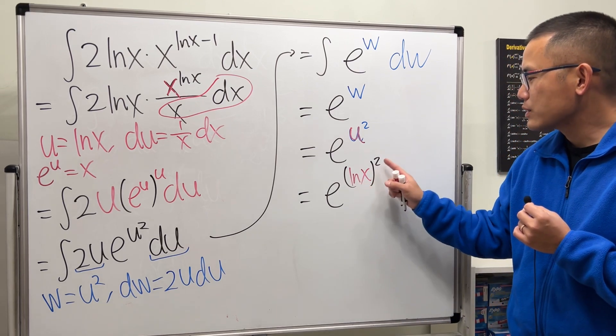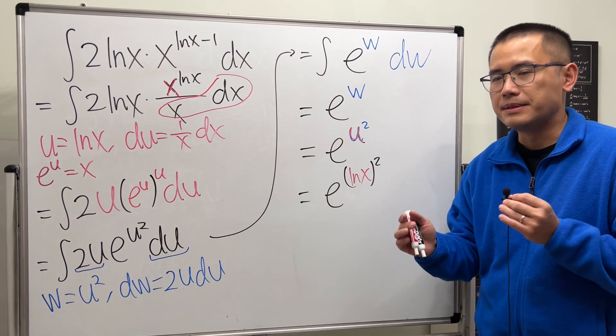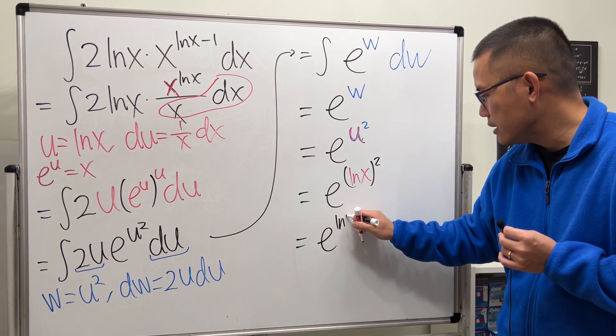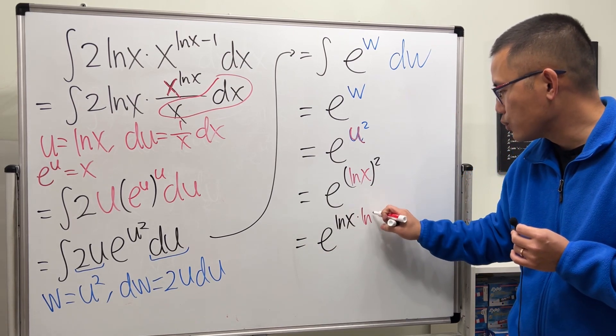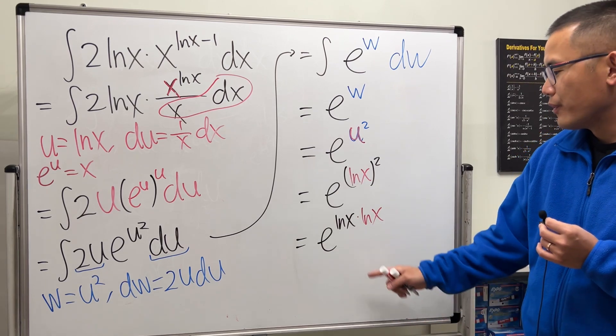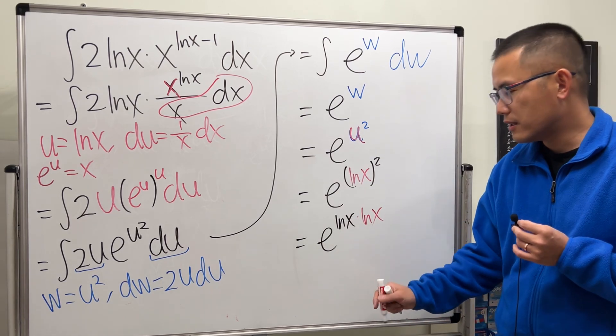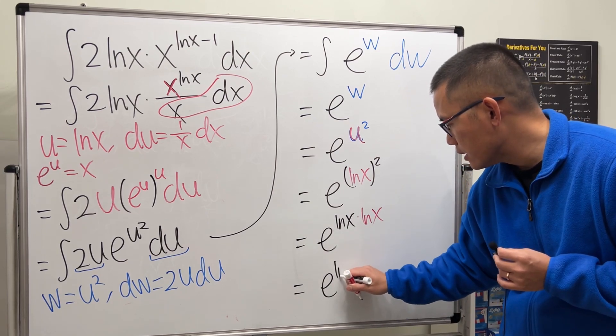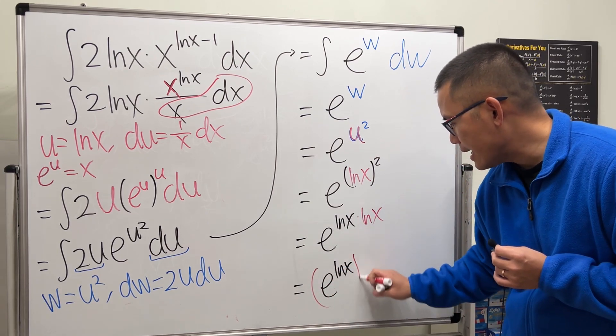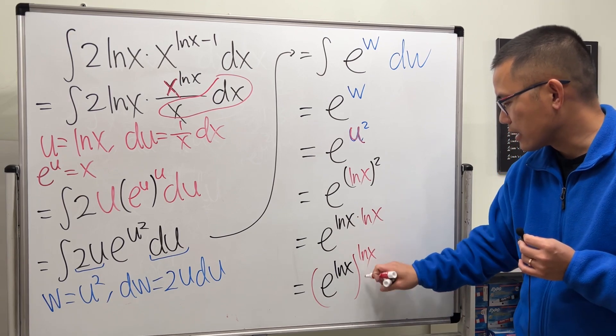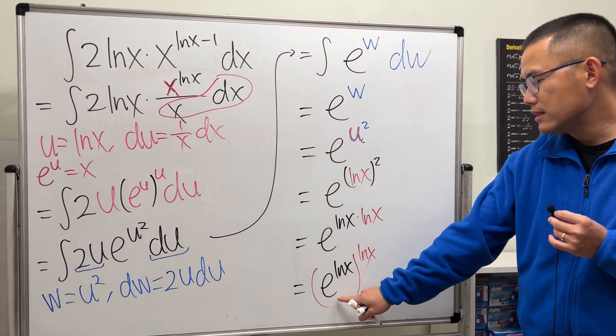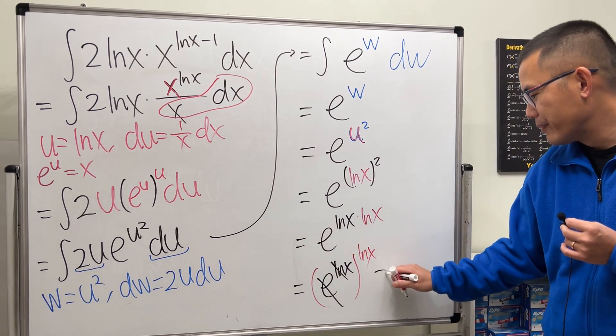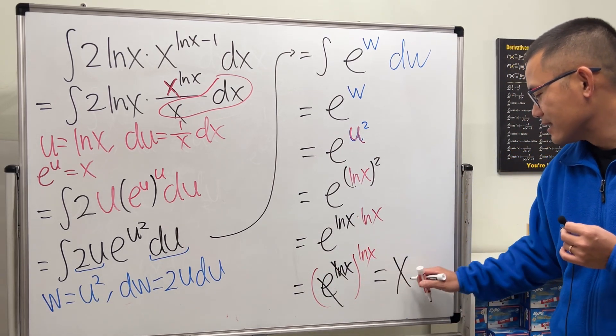lnx squared, it's the same as lnx times lnx. And check this out, I'm going to write the first lnx in black times the next one in red. When we have powers multiply together, we can put this with the base right here first, and then raise that to the second power like this. And now what's e to the lnx power? Well let's just cancel, so just get the x. So finally we just have x raised to the lnx power.